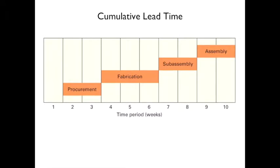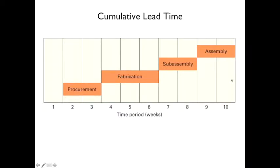Let's look at cumulative lead time. Say it takes 10 weeks to do something. The first week you place an order — there's a two-week lead time from when you place the order until it actually arrives. Then you need three weeks for fabrication, then sub-assembly, then assembly. That gives you a cumulative lead time of 10 weeks.